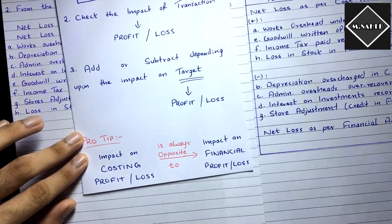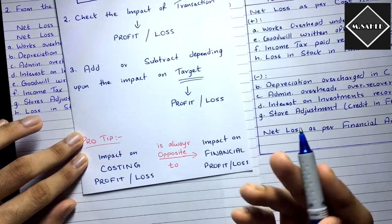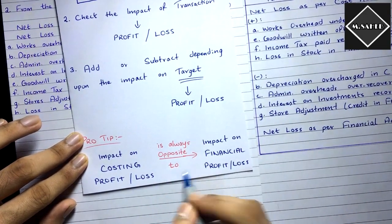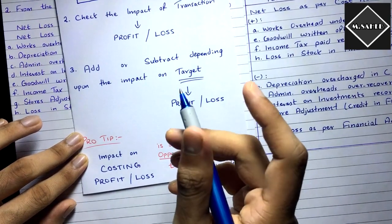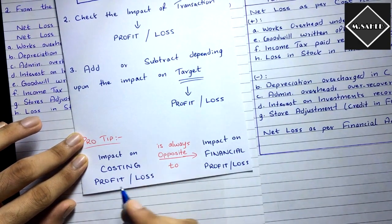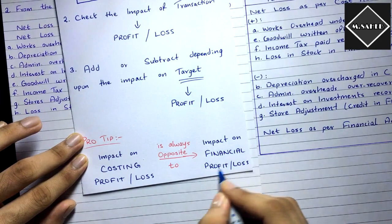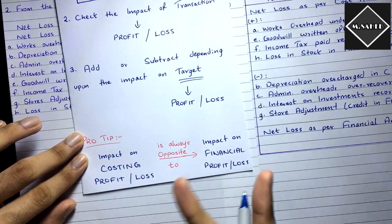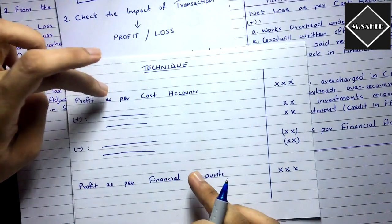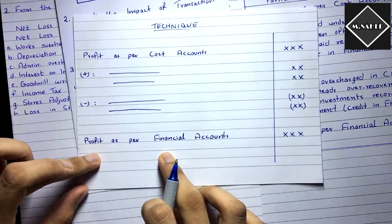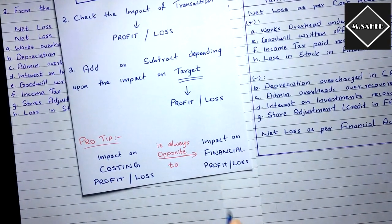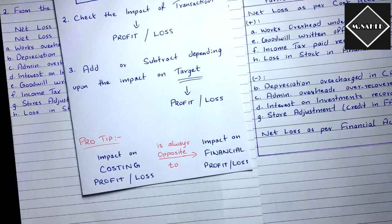For example, if a transaction affects costing profit positively — costing profit increases — then financial profit will always decrease because of that same transaction. The effect is always opposite. So if one transaction causes costing profit to increase, the financial account profit will decrease. Now let's solve the problem — whatever effect is there on target profit, do exactly that.